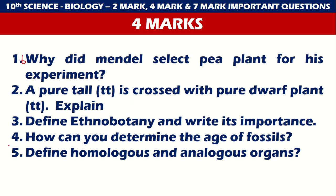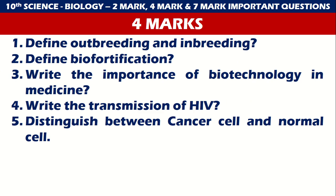Questions 16 to 20: Why did Mendel select pea plants for his experiment? A pure tall plant is crossed with a pure dwarf plant — explain. Define ethnobotany and write its importance. How can you determine the age of fossils? Define homologous and analogous organs. These are 20 questions for 4 marks.